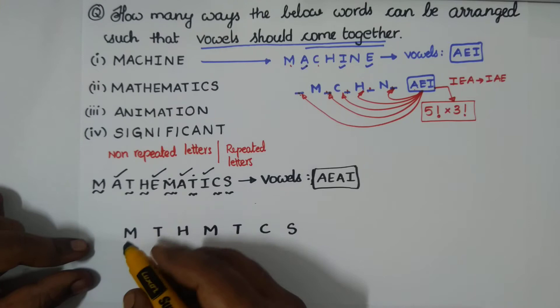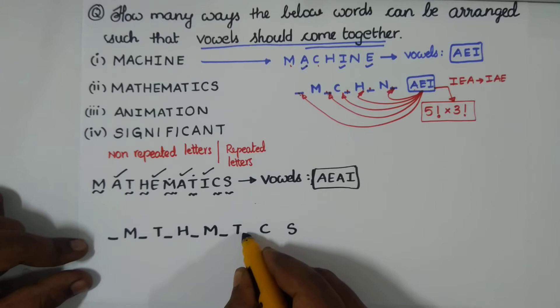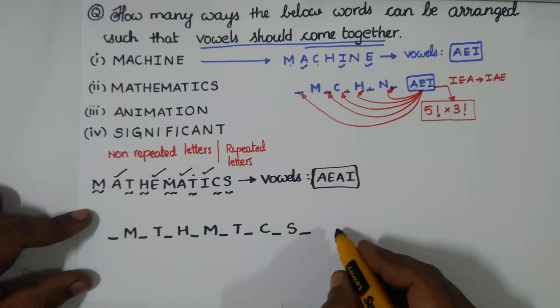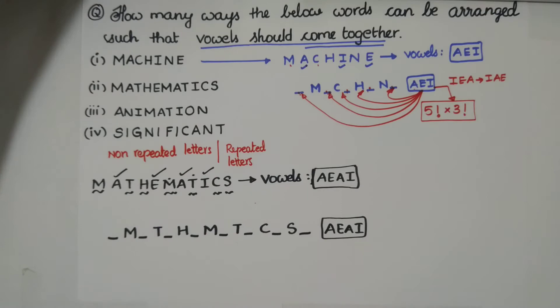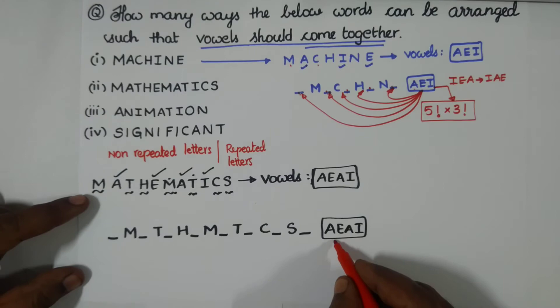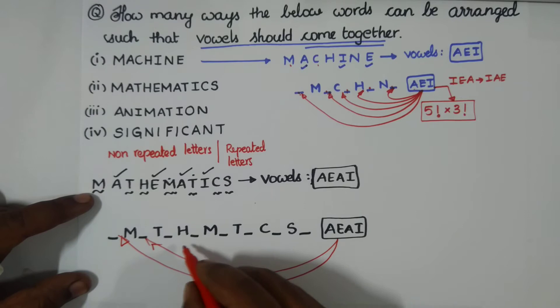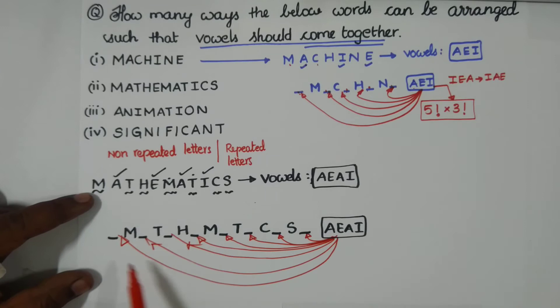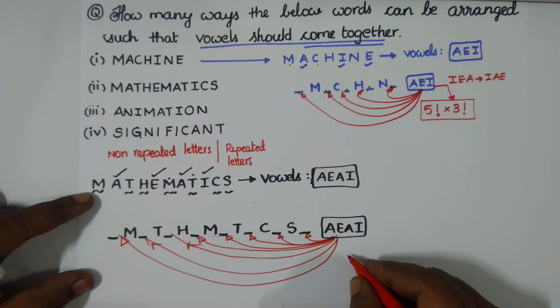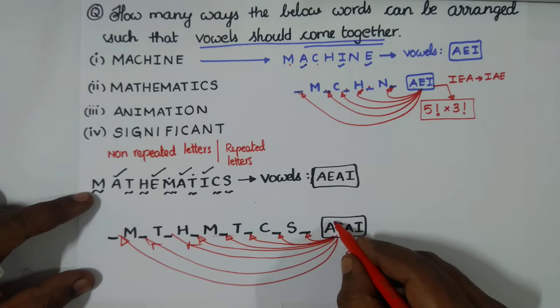We have seven consonants, so seven plus one gives us eight blanks where we can place the vowel group. We can put the vowel group in any of these eight blanks — here, or here, and so on. Counting the blanks: one, two, three, four, five, six, seven, eight. So we take eight factorial.